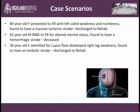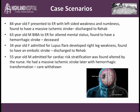A 34-year-old female was admitted for lupus flare who developed acute onset right-sided leg weakness, was found to have an embolic stroke, and was later discharged to a rehabilitation facility. The last case hits home for me, as this was a patient I took care of on my service. He was a 55-year-old male admitted for cardiac risk stratification who was found altered by his nurse in his room. He was found to have a massive ischemic stroke and received TPA, who later underwent hemorrhagic transformation.